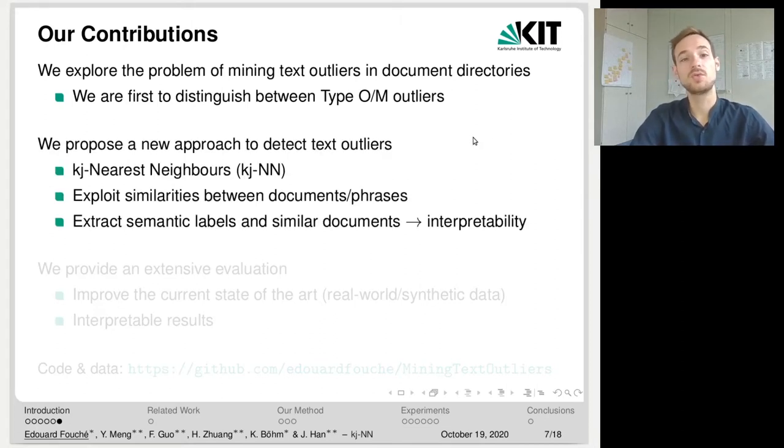Then we propose a new approach to detect text outliers, which we call the kj nearest neighbors. This approach is inspired by the famous k nearest neighbors algorithm. And the specificity of our approach is that it exploits similarities between documents to documents and between documents to phrases. And it extracts semantic labels and similar documents. So this yields good interpretability of our results.